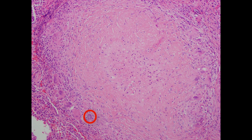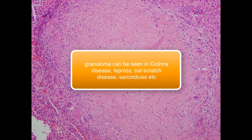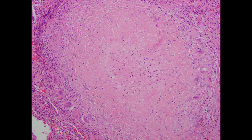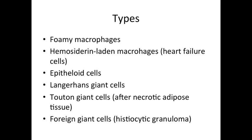Sometimes epithelioid cells can coalesce and form Langhans giant cells. In this picture you can see one — it has a horseshoe-shaped arrangement of nuclei, which is one of the ways you can recognize it. A consequence of all this can eventually be caseating necrosis. Remember, tuberculosis is not the only cause of granuloma — you can see granulomas in several diseases such as Crohn's disease, cat scratch disease, and many more.